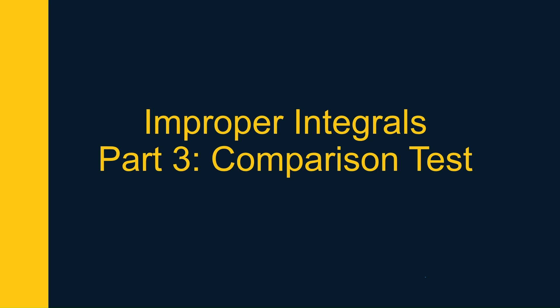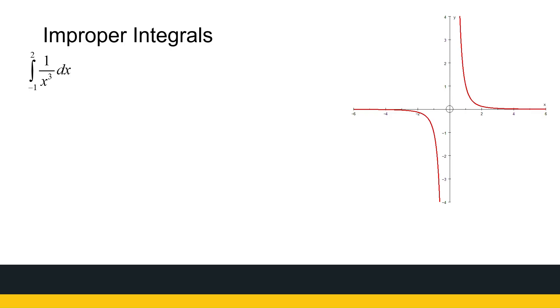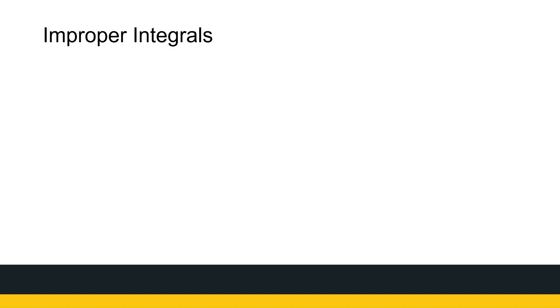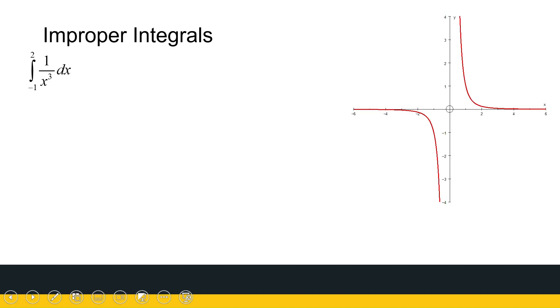In this last video on improper integrals, we're going to look at one example of an improper integral and then look at how to use the comparison test. So if we look at this example: the integral from minus 1 to 2 of 1 over x cubed dx. On face value it looks like a quick and easy find-the-antiderivative-and-substitute-in, but we cannot use the fundamental theorem of calculus here because this function 1 over x cubed, as we can see in the sketch, is undefined where x is equal to 0.